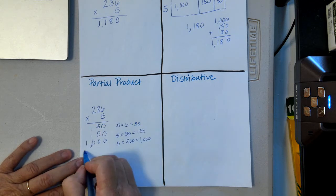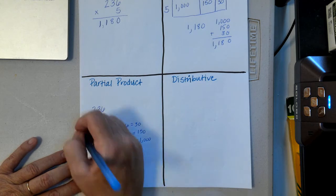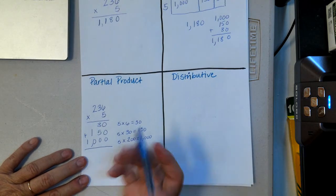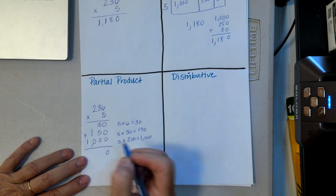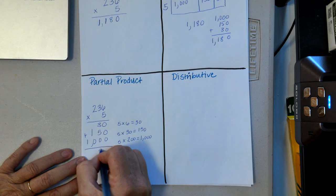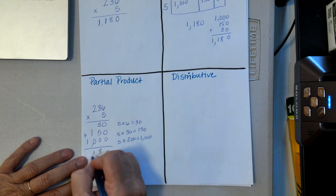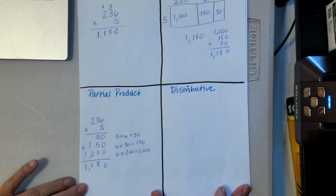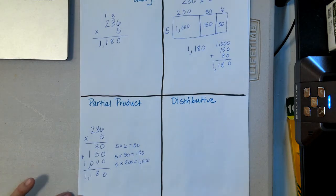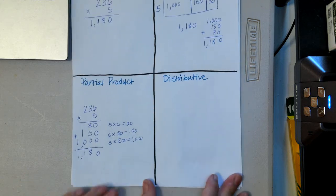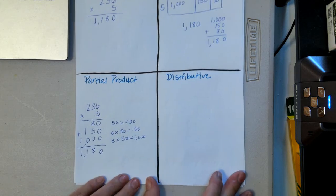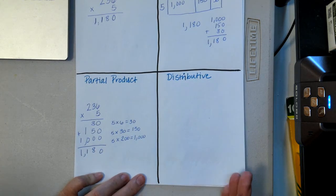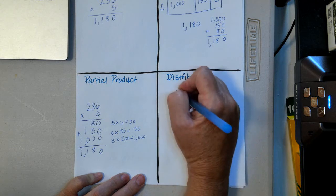Make sure you're always lining up the proper place value. Then I simply add those up — and I get the same answer again.